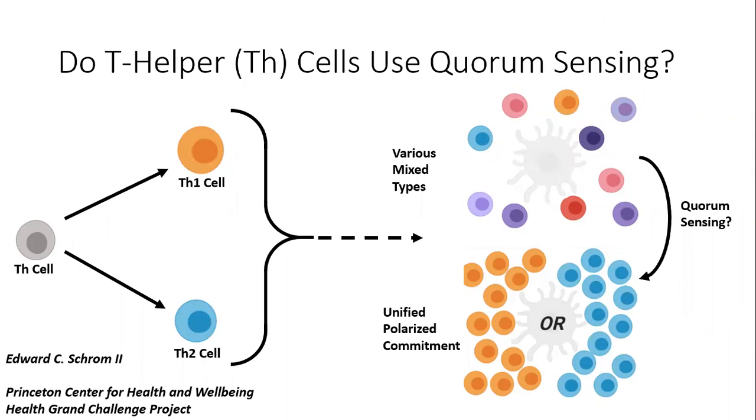During infection, T helper cells are responsible for choosing the appropriate immune weapons to fight the invading parasite.